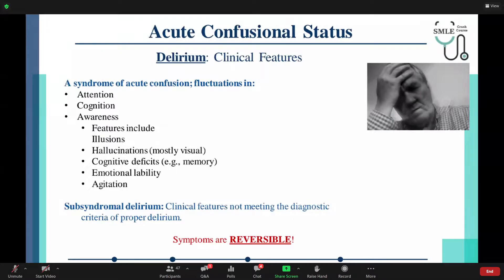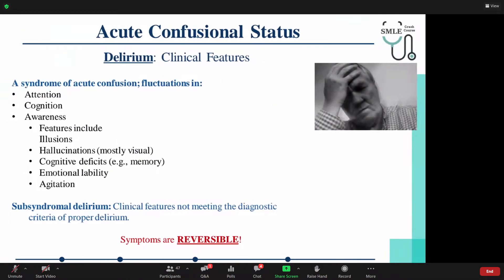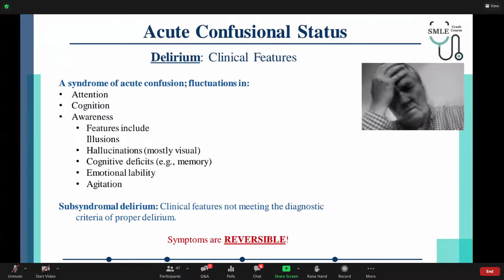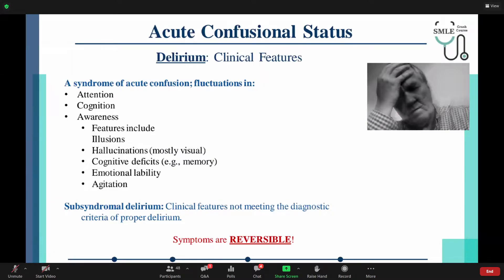Acute confusional status is a common label for the next three topics. We'll be discussing delirium, which is a syndrome of acute confusion with fluctuations in attention, fluctuations in cognition and awareness. Features include illusions — the patient will see illusions and hallucinate. Mostly you'll find visual hallucinations in delirium. We have cognitive deficits like memory, emotional lability, and agitation. There's also sub-syndromal delirium, which is a set of clinical features not meeting the diagnostic criteria. Symptoms are reversible.